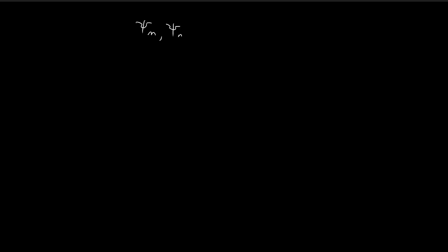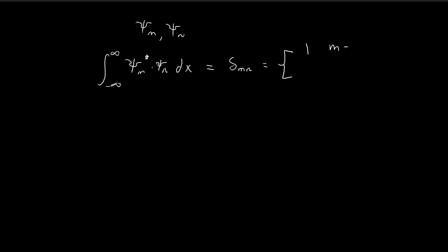The last thing we need to do is to prove that these functions are orthogonal to each other. What that means is that if we have this integral — the conjugate multiplied by the function corresponding to the n-th stationary state — this is going to be equal to the delta function: equal to 1 if m equals n, and equal to 0 if m is not equal to n. So these functions are orthogonal to each other.